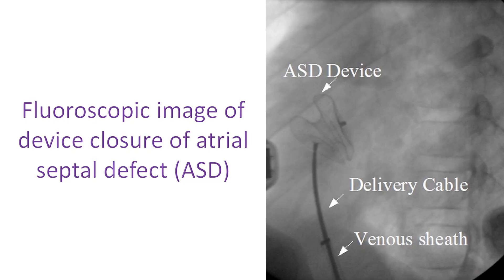So Eisenmenger syndrome is better prevented than treated. Neonatal screening is helpful in early detection and treatment of left-to-right shunts. All left-to-right shunts may not need surgery or device closure. Shunts detected in early life can decrease spontaneously and disappear later. This has been documented in all three types, though it is more typical of VSD.